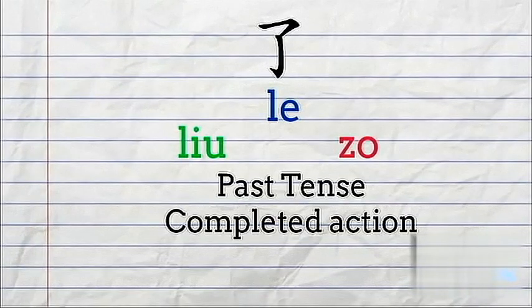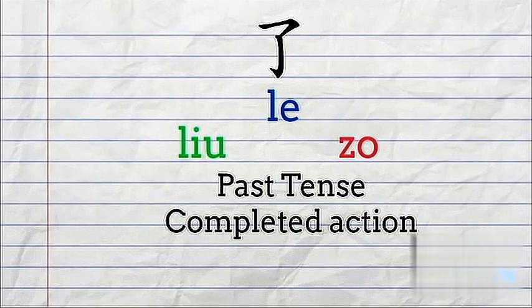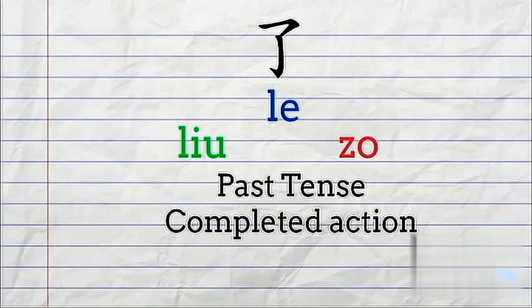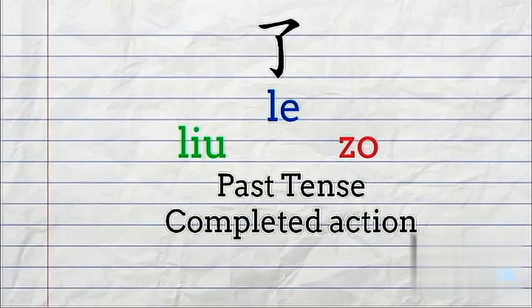了 has many usages. In this case, we're going to cover one, which is past tense. 了 basically indicates past tense. And in Cantonese, you might know it as 著. For example, 我食著. 我去了 — you might also hear 我食著了. In Mandarin, it's exactly the same: 我去了.